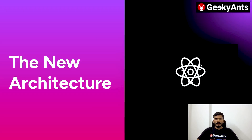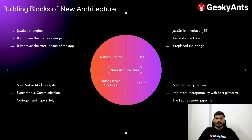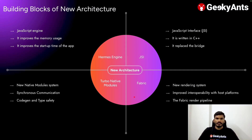In the new architecture, new components are introduced to reduce these limitations. The main components are: the Hermes engine, the new JavaScript engine; the JSI layer, which replaces the old bridge and is written in C++; Fabric, the new rendering system which is faster than the old one; and Turbo Modules, the new native modules that use JSI for synchronous communication and come with code generation and type safety.